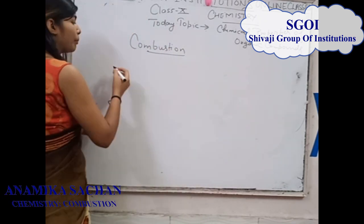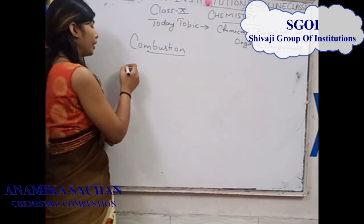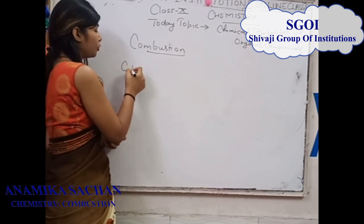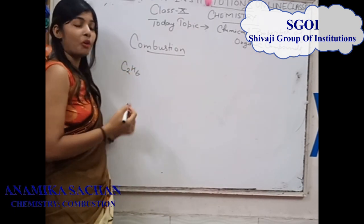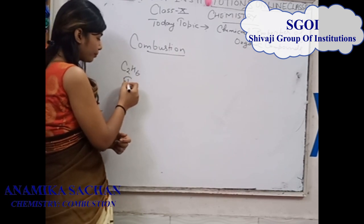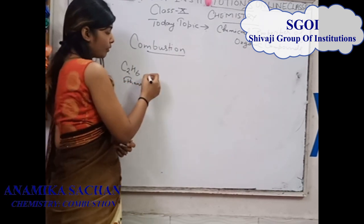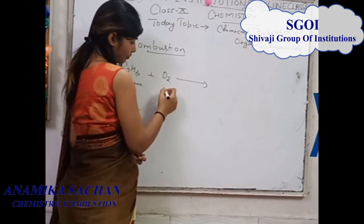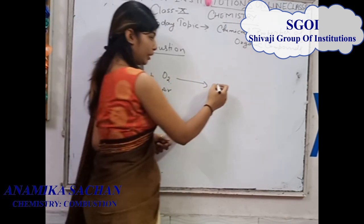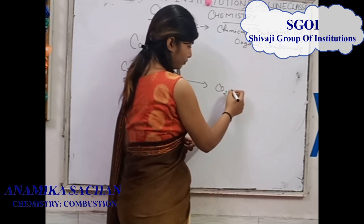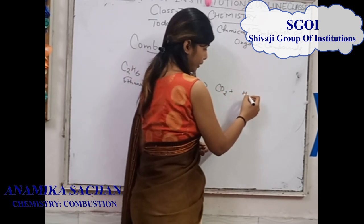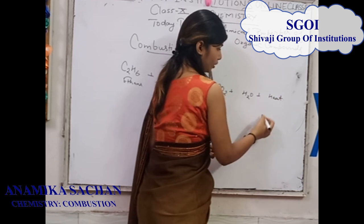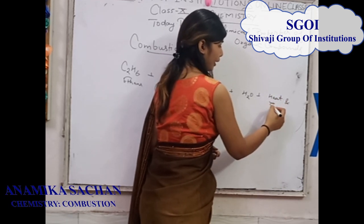Now let's look at the chemical reactions. The first reaction: we take the organic compound C2H6, which is the formula of ethane. When it reacts with air, it gives CO2 (carbon dioxide), water, heat, and energy.